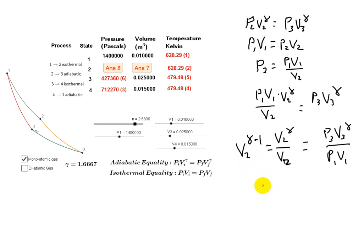So then if we wanted to isolate V2, we could raise both sides to the power of 1 over gamma minus 1. And that would give us V2 right here. So I would have V2 equals P3V3 to the gamma over P1V1, and then that is going to be to the power of 1 over gamma minus 1. Follow that? That's how you go about isolating V2.